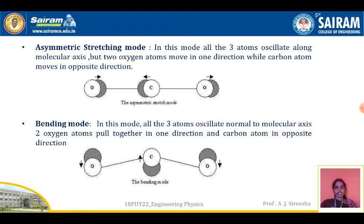Next is the asymmetric stretching mode. In this mode, all three atoms oscillate along the molecular axis, but the two oxygen atoms move in one direction while the carbon atom moves in the opposite direction. The directions of the carbon and oxygen atoms are opposite to each other, but the two oxygen atoms move in the same direction. This is called the asymmetric stretching mode.